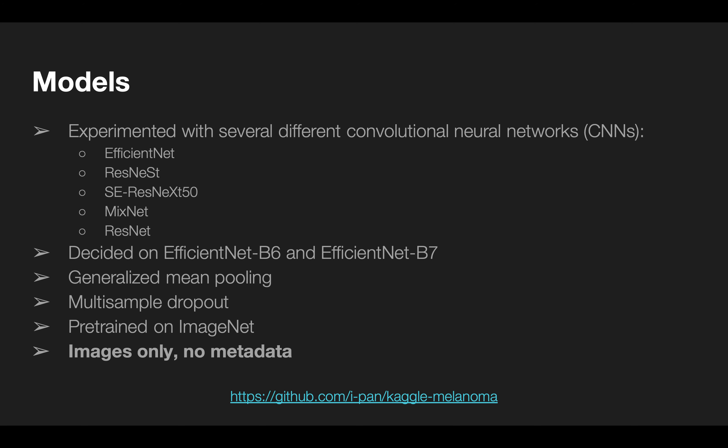I experimented with many different backbones and found that EfficientNet B6 and B7 gave the best performance. I used generalized mean pooling, multi-sample dropout, and pre-trained ImageNet weights. I did not use any metadata, only images. As it turns out, my models incorporating metadata actually performed worse on the public test set.